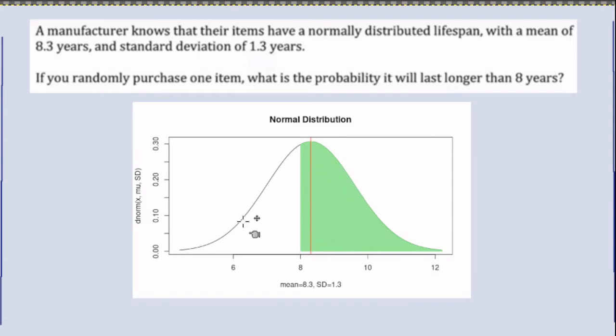Here's a picture of the problem that we're examining. We've got the normal distribution with a mean of 8.3. This red line is listed at 8.3. Half of the distribution is above that and half is below, and we want the probability of the x value being greater than 8.